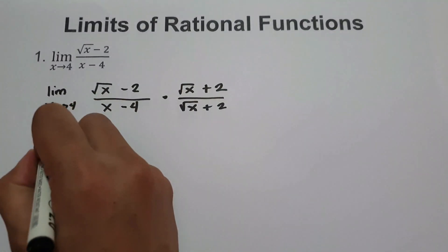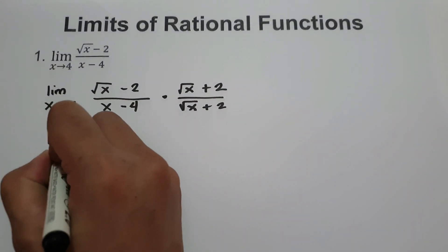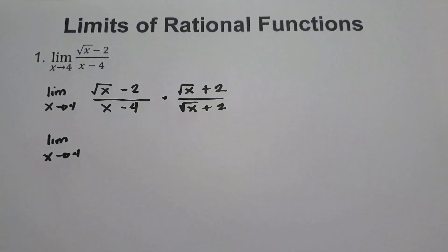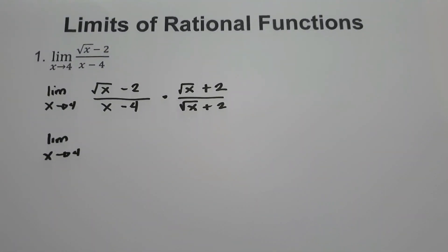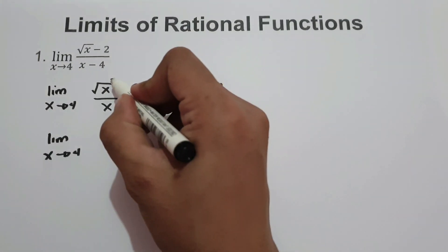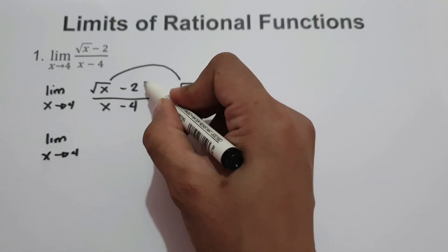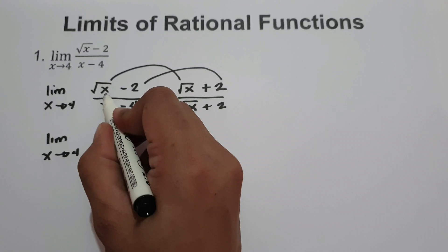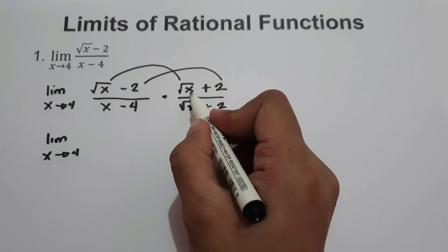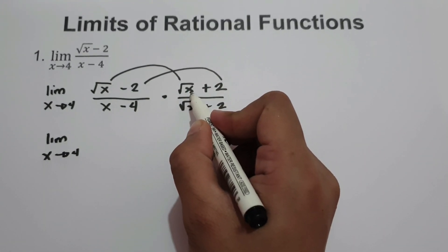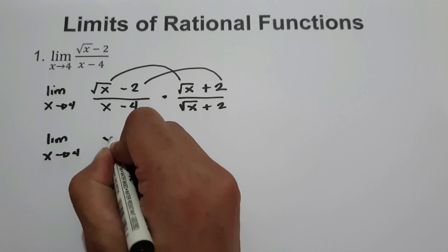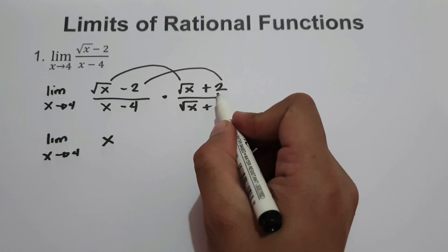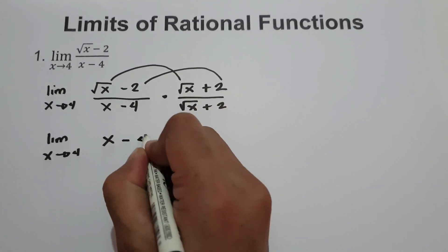And then we have the limit as x approaches 4. So whenever you multiply by the conjugate, you multiply first term by first term and last term by last term. Square root of x times square root of x is square root of x squared, and the square root of x squared is x. And then negative 2 multiplied by positive 2 is negative 4.